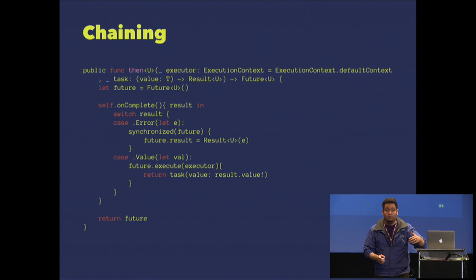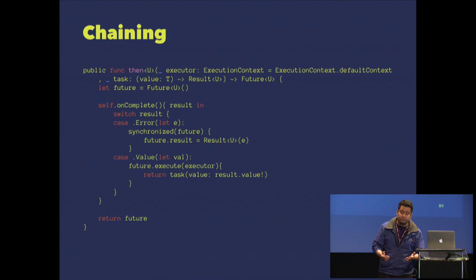We have to chain in some way. Let's create a function that gets the first block, completes it, and gets another function after that block is completed — a chain that runs asynchronously, so I'm not blocking the main thread anymore. If the result is good, I move to the next future. If everything fails, I just return the error without running the task.